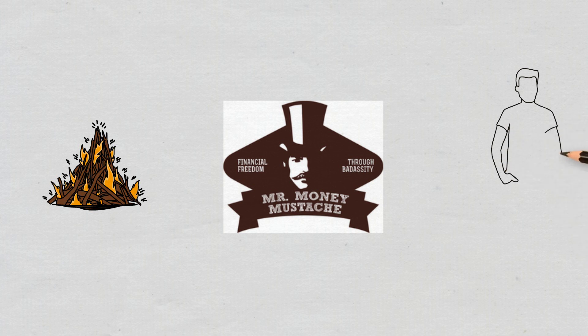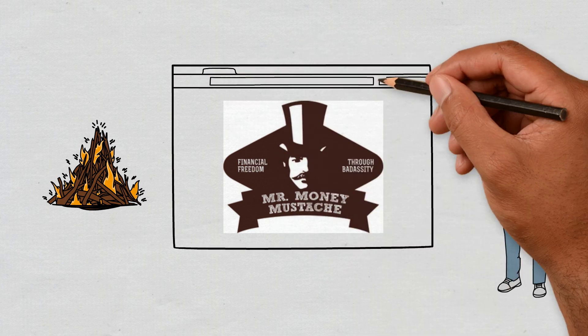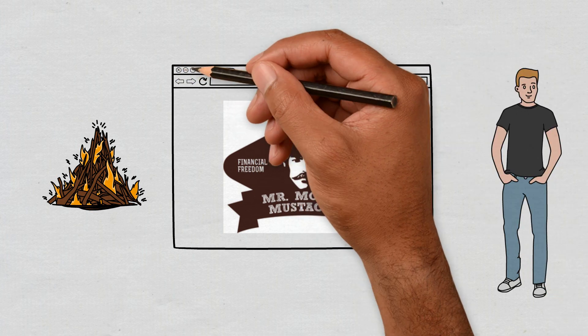Mr. Money Mustache, known for being extremely frugal and retiring at an astonishingly young age of 30 years old, Pete now helps others achieve their financial goals, primarily with his blog, which has been featured in The New Yorker, CBS News, Market Watch, and more.